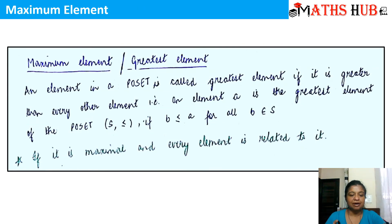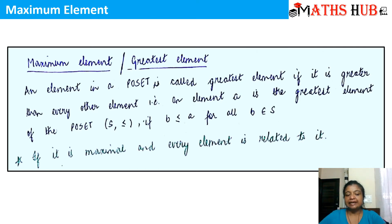Let's come to the definition of the maximum element. The maximum element is also called the greatest element. An element in a poset is called the greatest element or the maximum element if it is greater than every other element. That is, an element A is the greatest element of the poset S with a less-than-or-equal-to partial order, if B ≤ A for all B belonging to S. That means if any element is greater than every other element in the poset, that element is called the maximum.